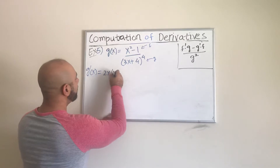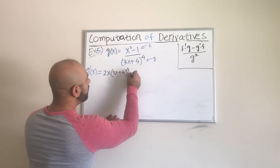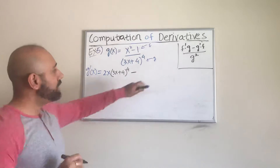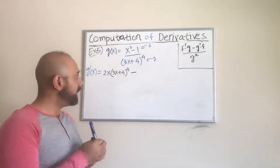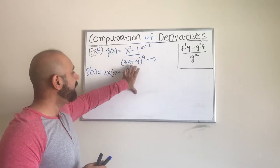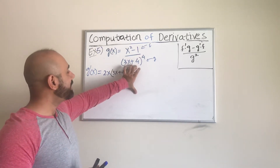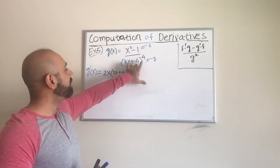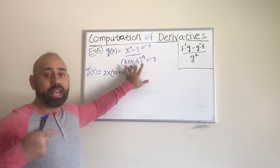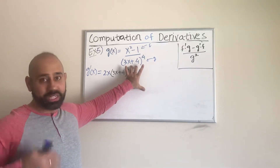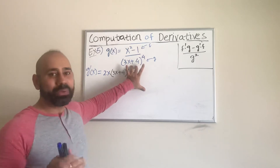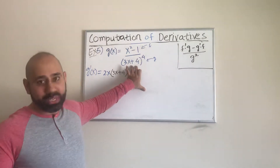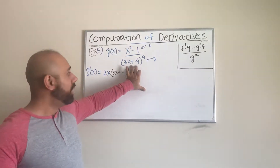I multiply 2x by the g function, which is (3x + 4) raised to the power 4. Then I subtract the derivative of the g function. Looking at the denominator, it is this whole quantity raised to the power 4, so one cannot just directly use the power rule alone. Although we are going to use the power rule, there is something more — in this case it's the chain rule.